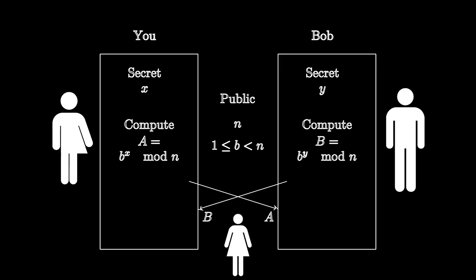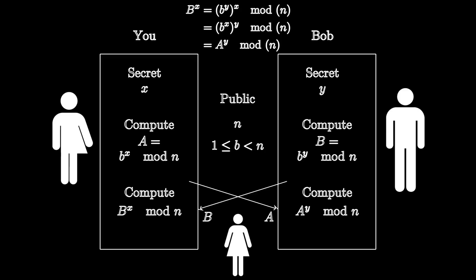Now here's the magic. You compute capital B to the x and Bob computes capital A to the y. Since capital B to the x equals lowercase b to the y in parentheses to the x, we can use the laws of exponents to switch these. Since lowercase b to the x equals A, we have that capital B to the x is equal to capital A to the y. This means that each of you now has a number that both of you know, but Emily doesn't. Now you can set the safe to this number and Bob can access it whenever he wants.